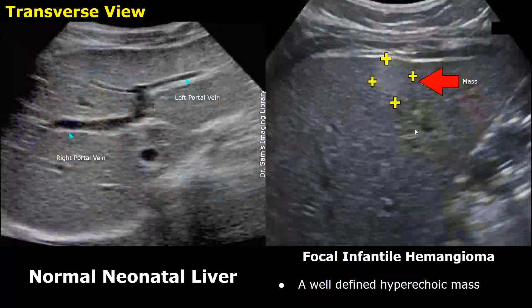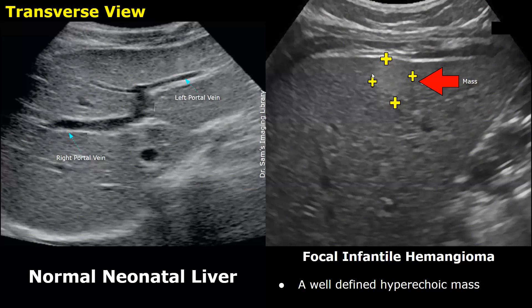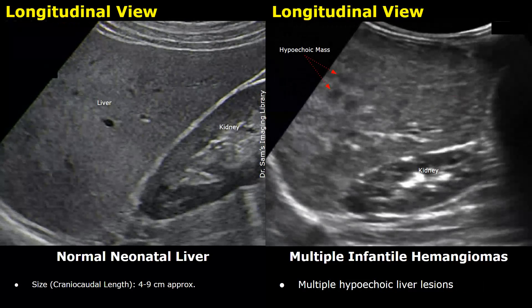Small focal hemangiomas are also seen in some infants, appearing just like in adults — a hyperechoic, well-defined mass in the liver. Multiple hemangiomas can also occur in infants; they usually appear hypoechoic. Here we can see multiple hypoechoic lesions in the liver, which is the typical appearance of multiple infantile hemangiomas.